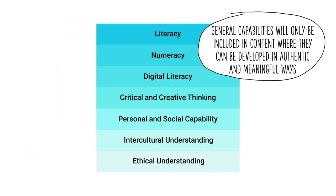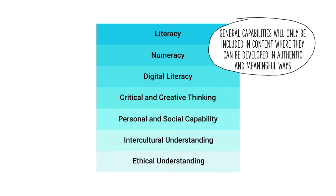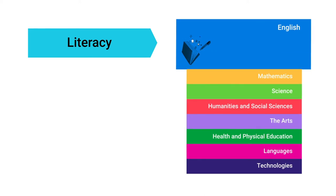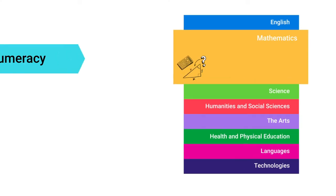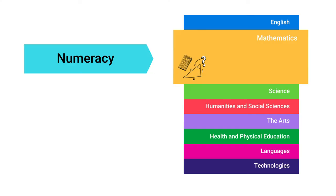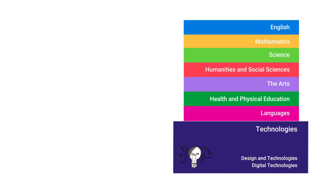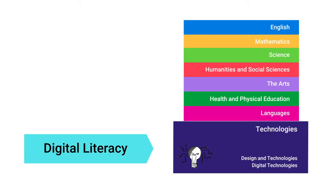General capabilities will only be included in learning area content where they can be developed in authentic and meaningful ways. In some learning areas and subjects, general capabilities are developed in the content descriptions. For example, English is the principal learning area to develop the literacy required for all other learning areas. Mathematics develops the numeracy skills to support other learning areas, and Digital Technologies develops the foundational skills and knowledge for the application of digital literacy across the curriculum.